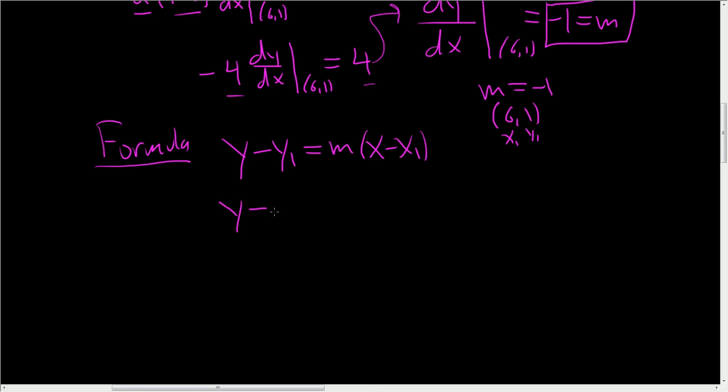So y minus 1 equals negative 1 times x minus 6. So y minus 1, distributing the negative 1, you get negative x plus 6. Add the 1,